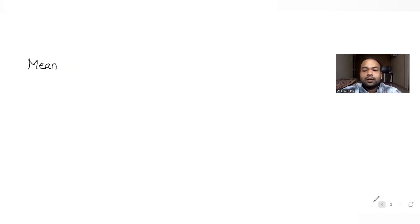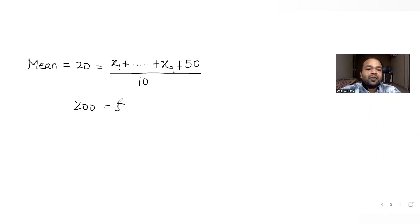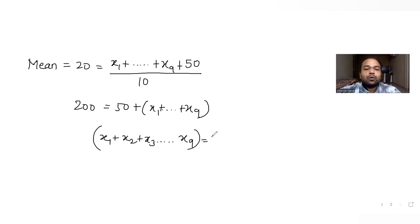Let's first work with the incorrect observations. We were told mean is 20, which is the sum of all observations — x1 to x9 plus the last observation which was the incorrect one, that is 50 — divided by 10. Solving this gives 200 = 50 + sum of the first nine observations, so the sum of the first nine observations equals 150.